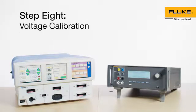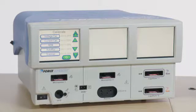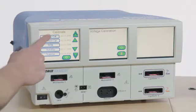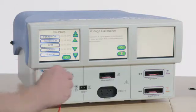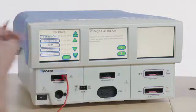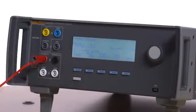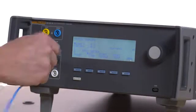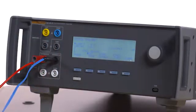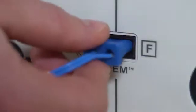Step 8 voltage calibration. Select voltage calibration from the calibrate menu on the Force Triad. Connect a red cable from the rightmost input jack of the monopolar port of the Force Triad to the variable high on the QAES3. Connect the ESU dispersive safety lead to the variable low port on the QAES3 and then the REM port on the Force Triad.